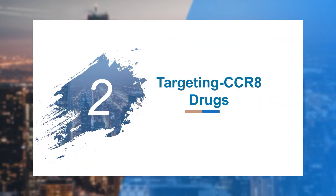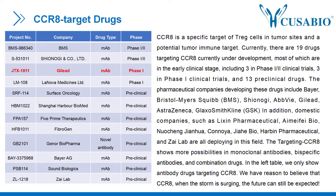Since CCR8 is considered to be a potential tumor immune target, what are the current drugs targeting CCR8? According to incomplete statistics, there are 19 drugs targeting CCR8 currently under development, most of which are in the early clinical stage, including 3 in Phase I/II clinical trials, 3 in Phase I clinical trials, and 13 preclinical drugs.